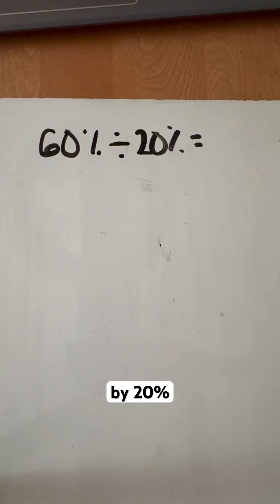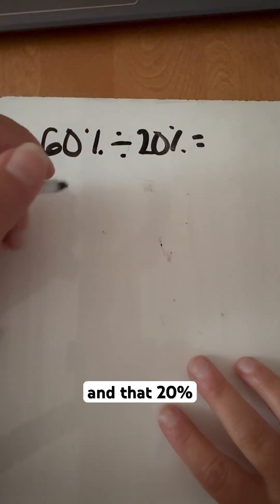If we're looking at 60% divided by 20%, the first thing I'm going to do is change that 60% and that 20% to a decimal.